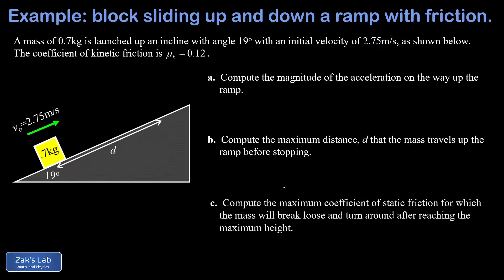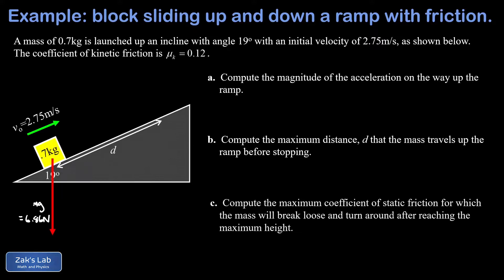In part A, we want the magnitude of the acceleration on the way up the ramp. We start getting forces into the diagram. Gravity points straight down — that's our force of gravity, mg. The mass is given as 0.7 kilograms, giving us 6.86 newtons. We decompose this force of gravity into the standard parallel and perpendicular components. The angle between the vertical and the perpendicular is the same as the angle of incline for the ramp, which is 19 degrees here.